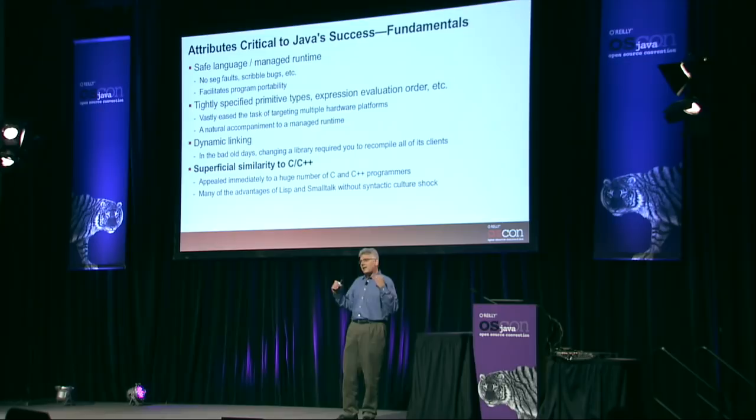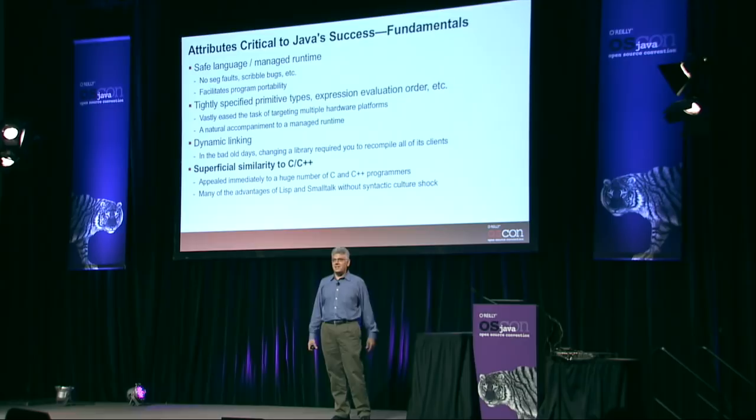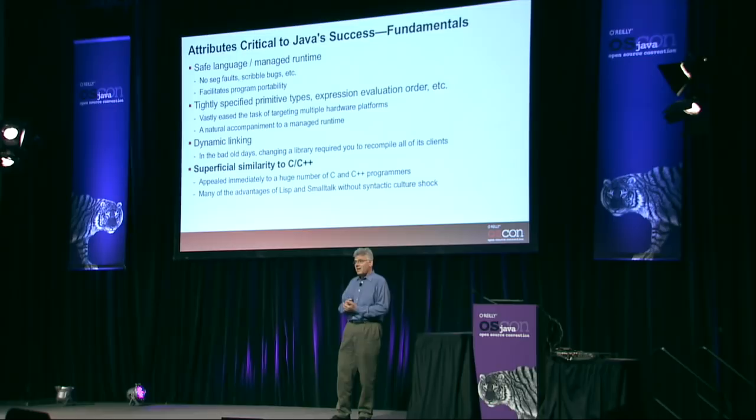Dynamic linking was very important. Anyone who's spent a lot of time programming in C or C++ knows that when you change a library, you have to recompile every single client program, which meant clean builds were essential. If you didn't do that, you got strange bugs and spent a week chasing them down. Java, by contrast, loads the libraries dynamically. If you change the library, you don't have to touch the clients — everything just works, with one small but important exception.